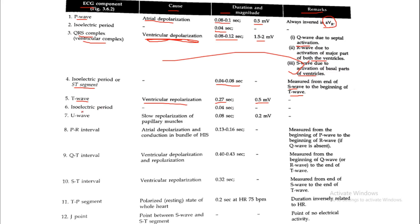Between the T wave and U wave there is a straight isoelectric period with a duration of 0.04 second. The U wave represents the slow repolarization of the papillary muscle, with a duration of 0.08 second and a magnitude of 0.2 millivolt. The PR interval represents atrial depolarization and conduction in the bundle of His.